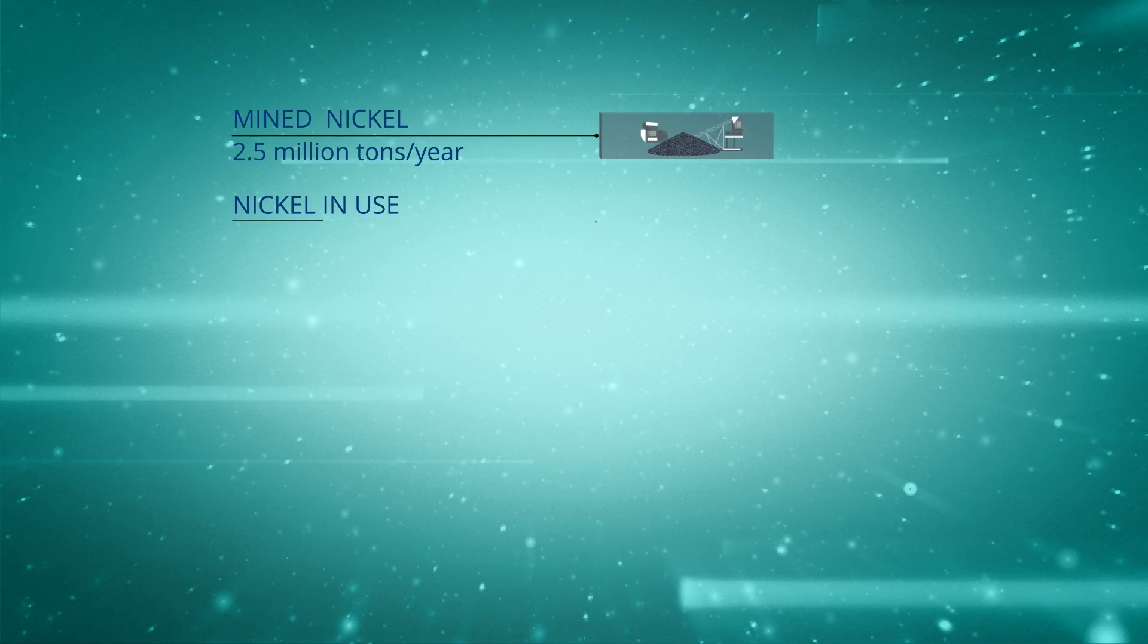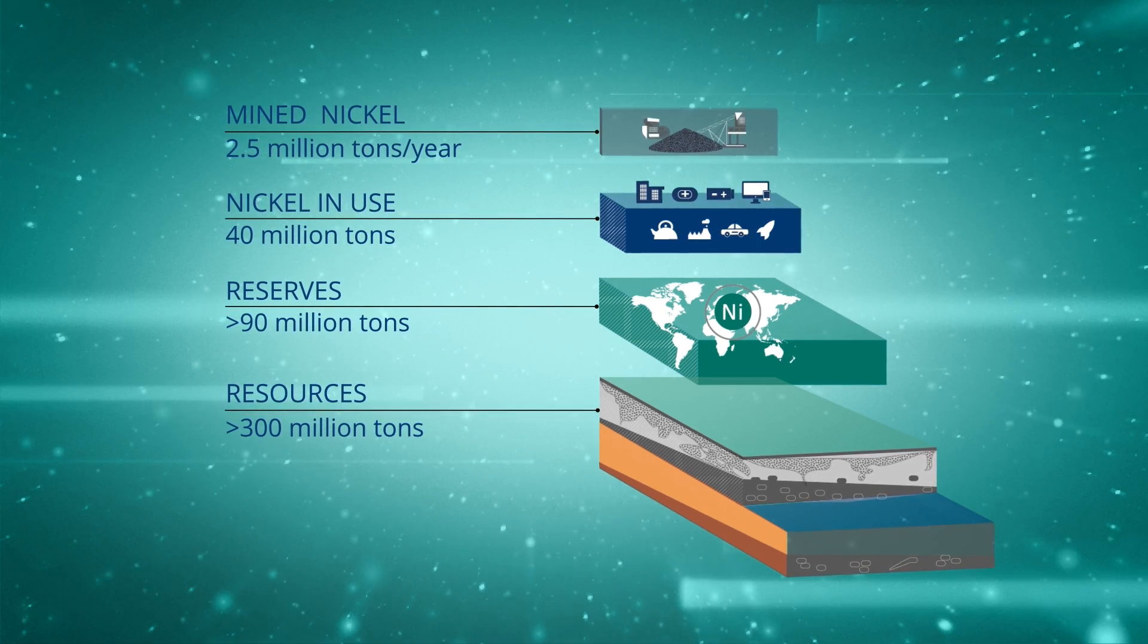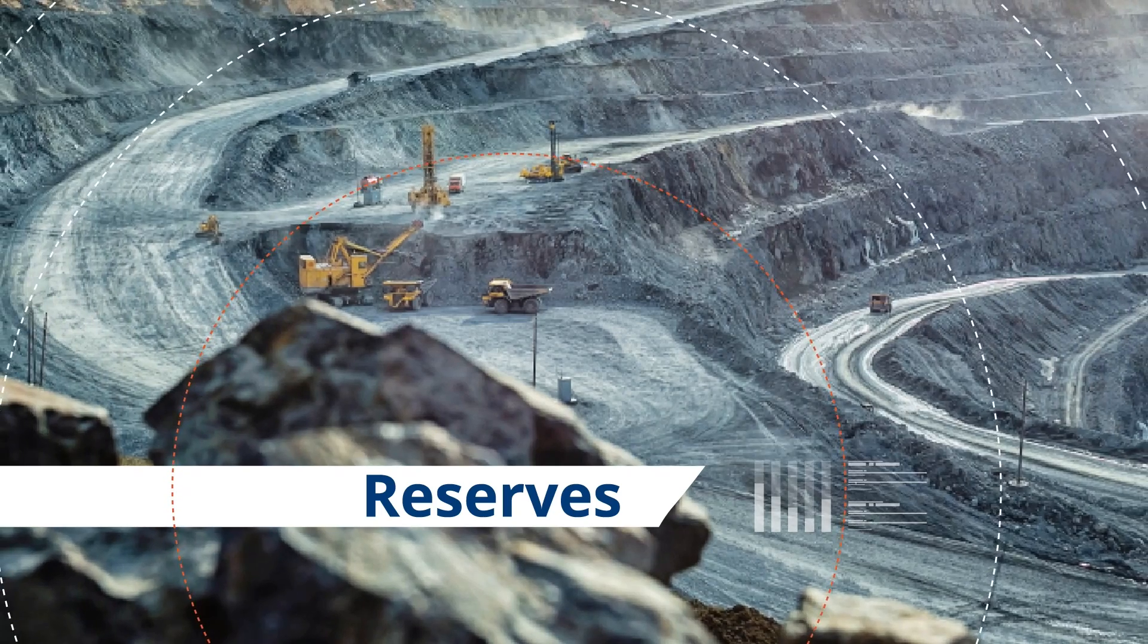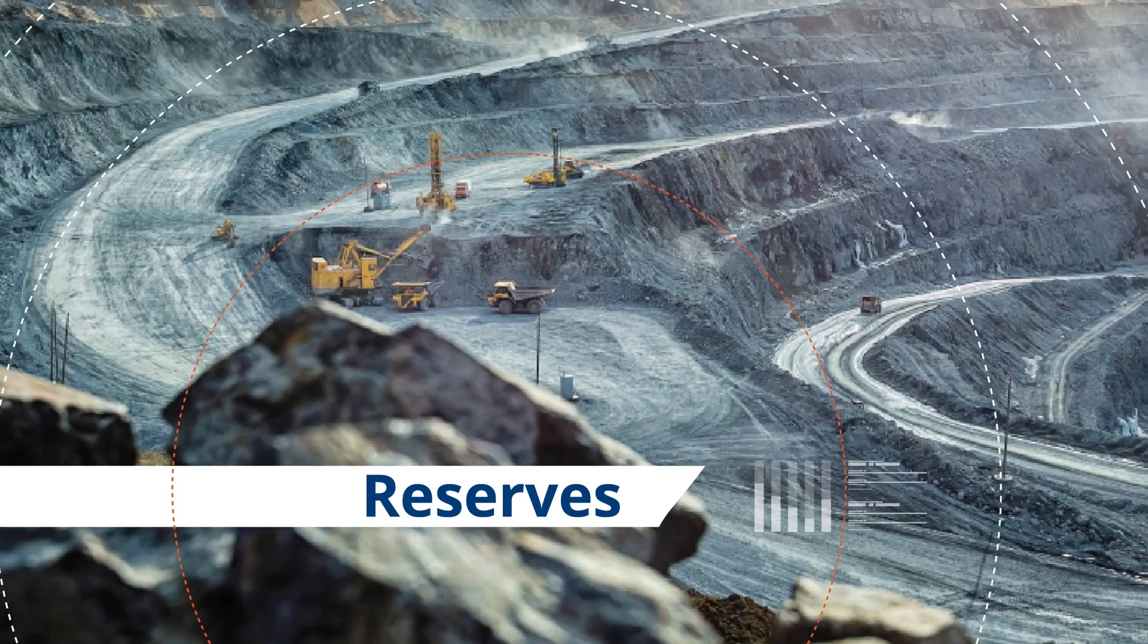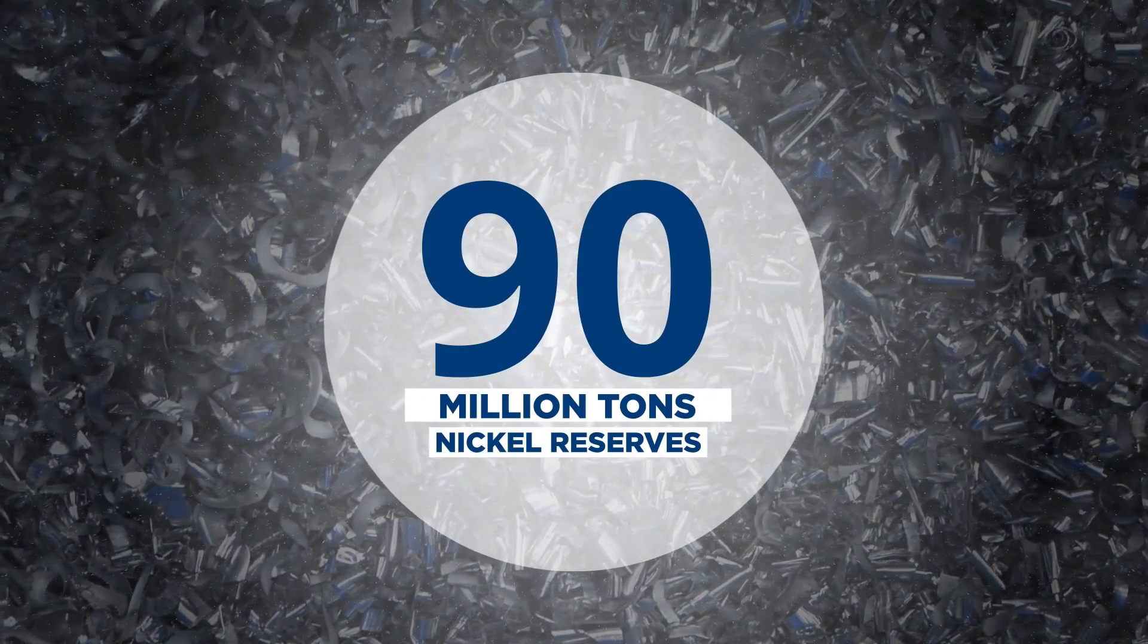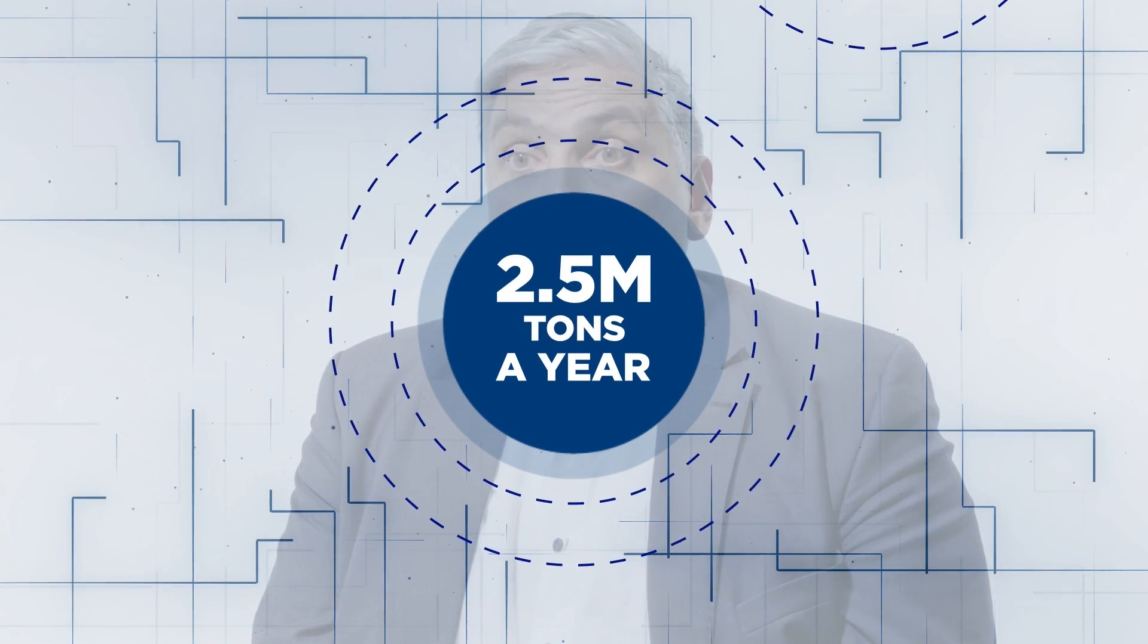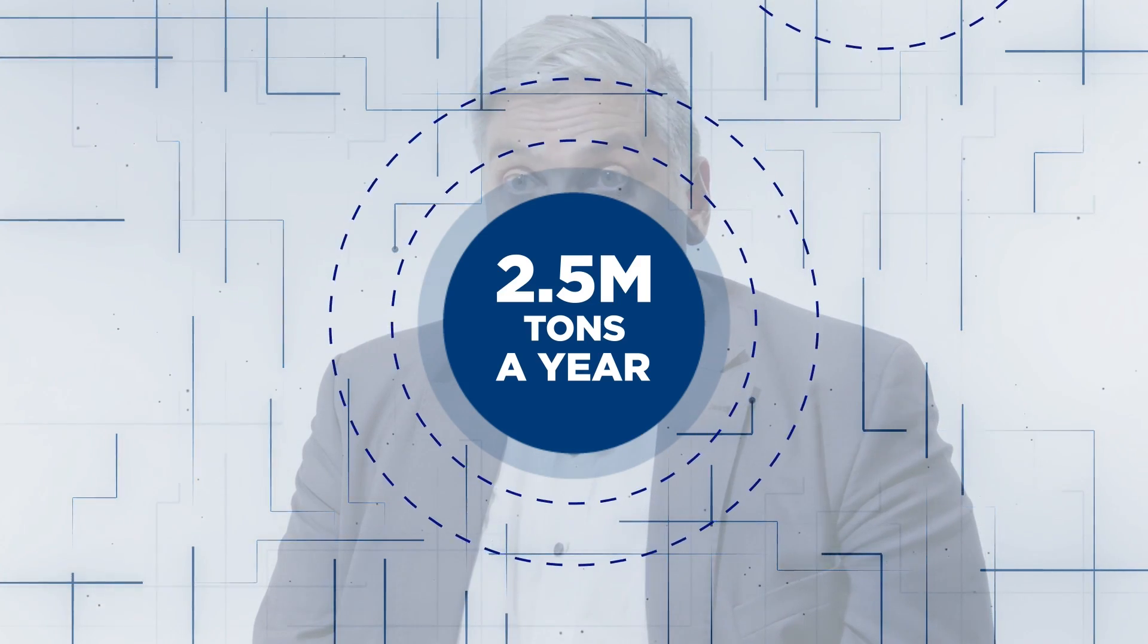When people talk about availability of nickel, they often use the terms resources and reserves, and it's important to understand what they mean. Resources describe potential future ore deposits where exploration still needs to be done, while reserves are deposits where exploration was already done and we know they can be mined economically. Today, there are 90 million tons of nickel reserves and 300 million tons of nickel resources. Companies continuously add new ore deposits to both resources and reserves. At current production levels of 2.5 million tons per year, there is enough nickel for current and future generations.